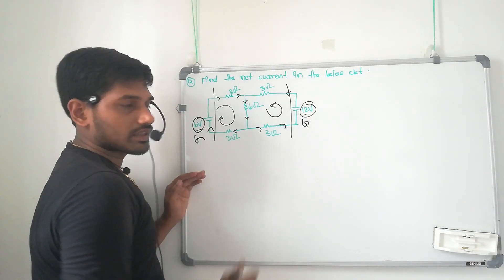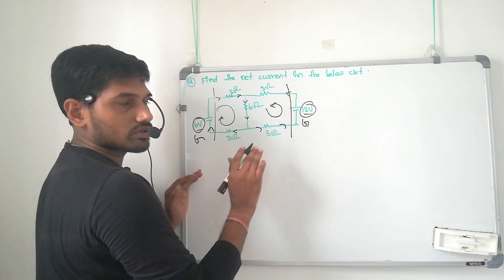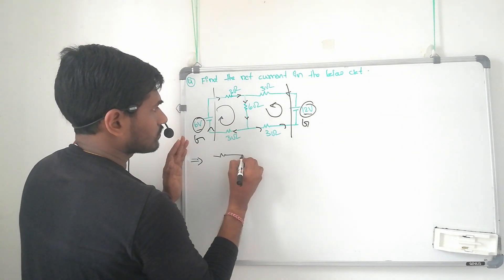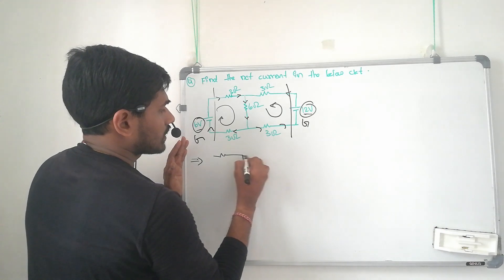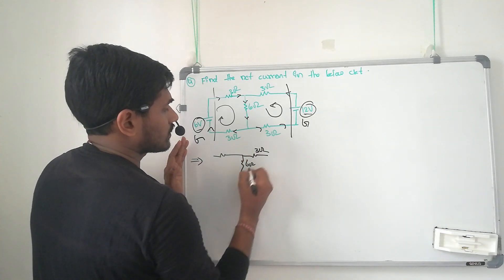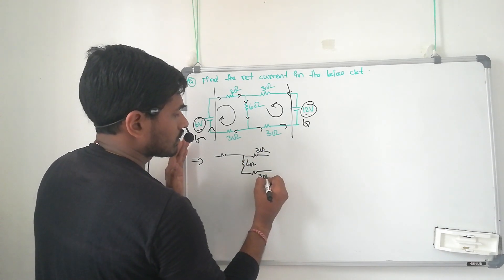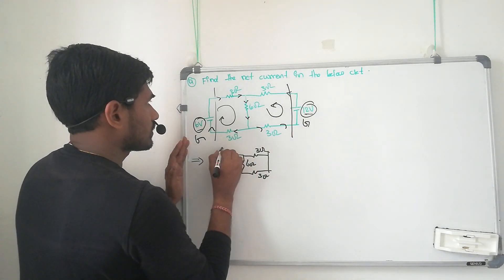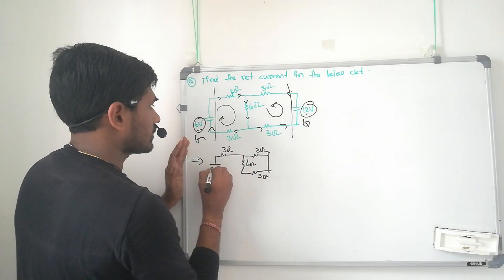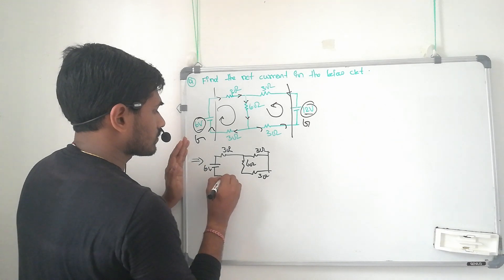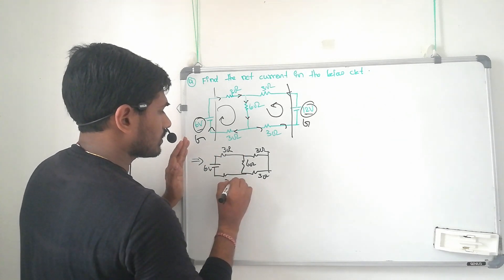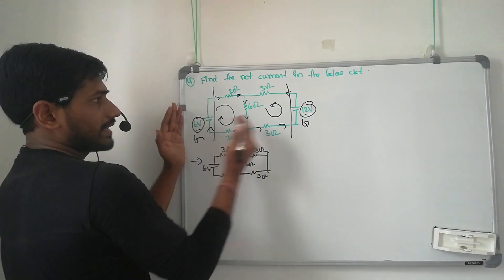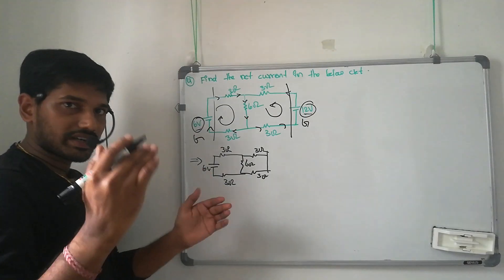I am shorting the first 12 volt source. The remaining circuit stays as is. Here 3 ohm, here 6 ohm, here also 3 ohm, here also 3 ohm. So I am shorting this 12 volt source — here also 3 ohm. With the 6 volt source remaining, the remaining source is attached to all resistors and I will calculate one current value.